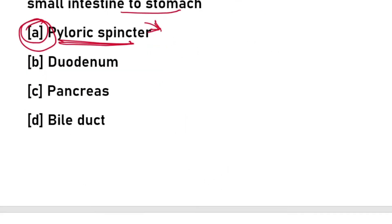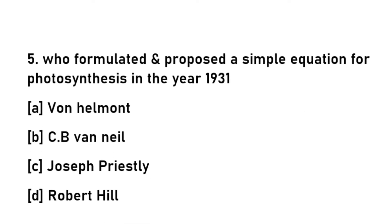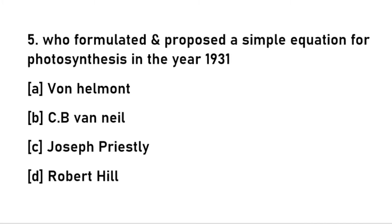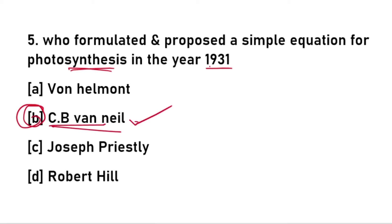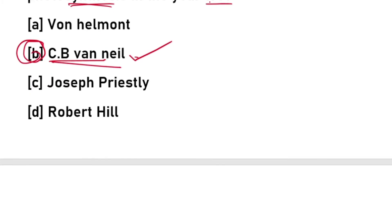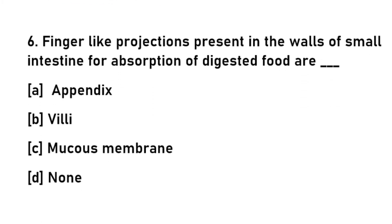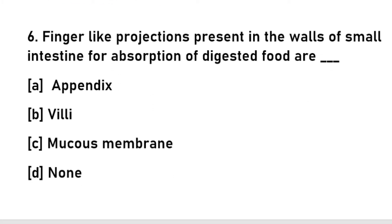Fifth question: who formulated and proposed a simple equation for photosynthesis in the year 1931? The answer is C.B. van Neil. C.B. van Neil proposed and formulated a simple equation for photosynthesis.